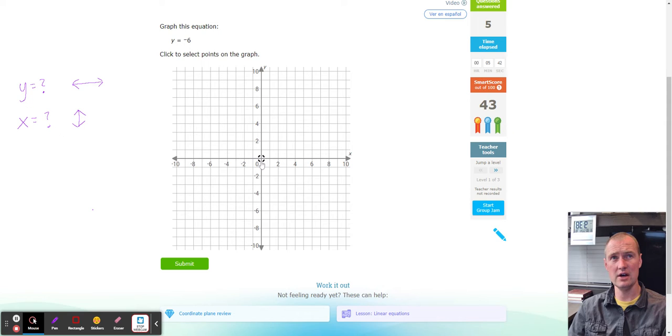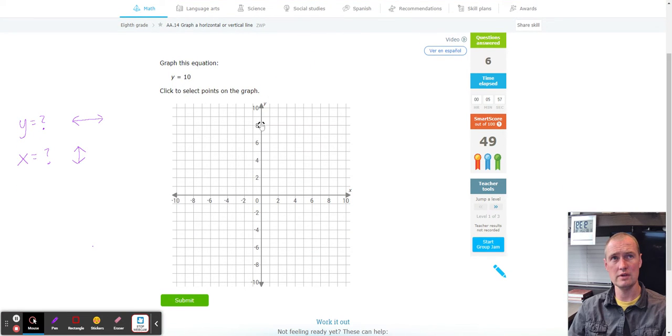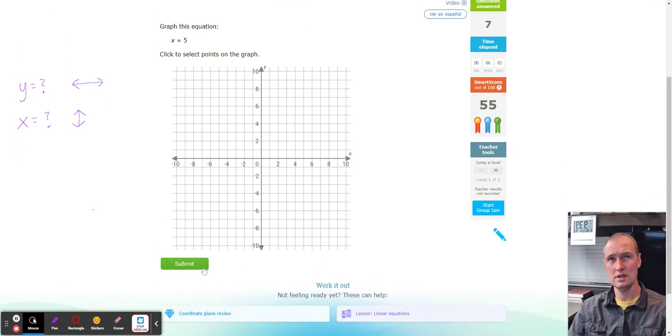Y equals negative six down, negative one, two, three, four, and negative five and six. So it needs to be through negative six. And this is a line going horizontal. Y equals 10. One, two, three, four, five, six, seven, eight, nine, 10. And just make it horizontal.